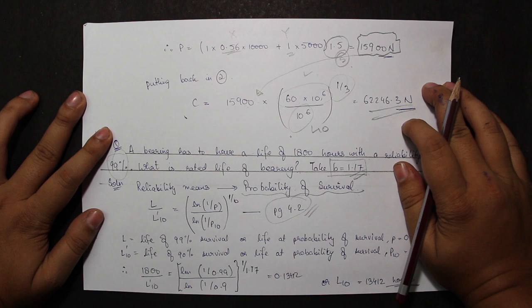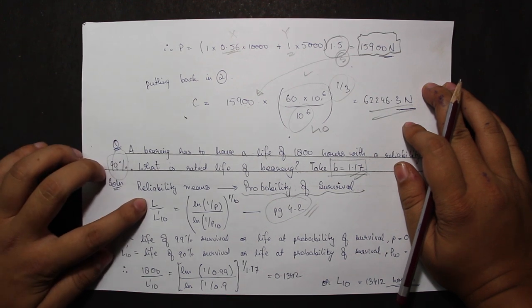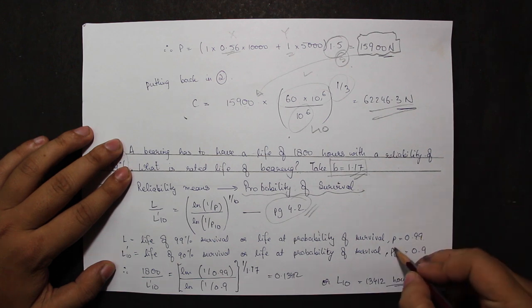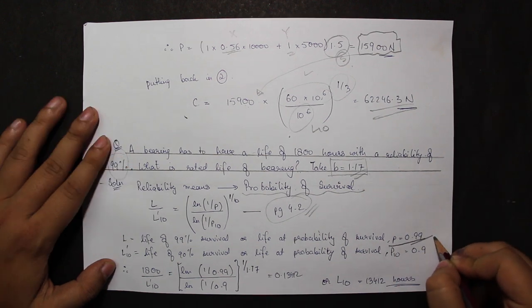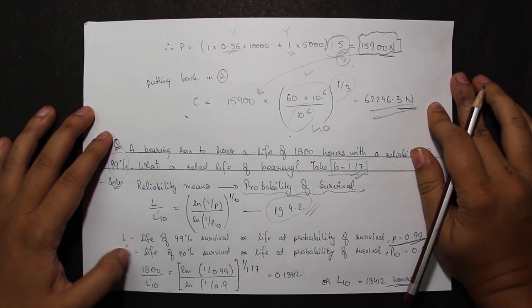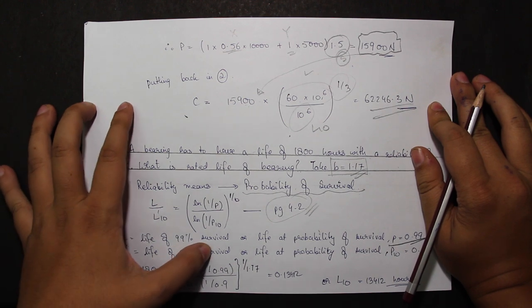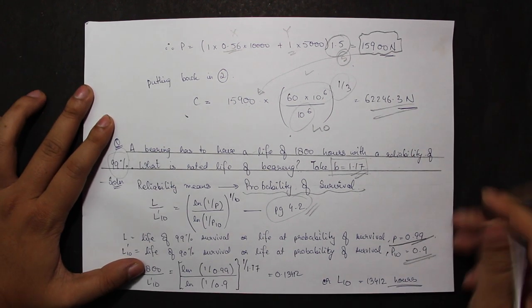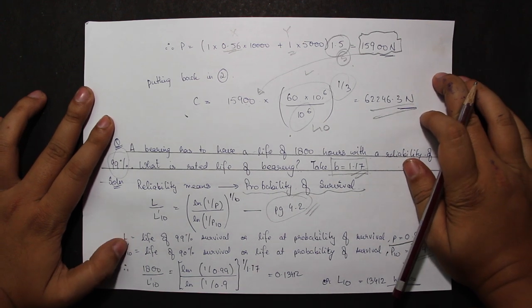So in the formula, L is equal to life of 99% survival or life at probability of survival, that is P is equal to 0.99. And L dash 10 is life of 90% survival or life at probability of survival P10, that is 0.9 only.